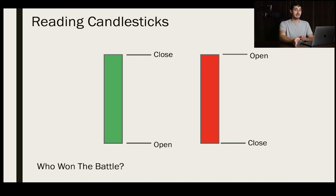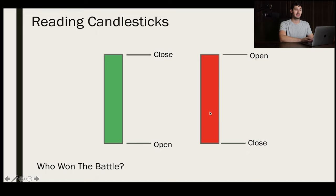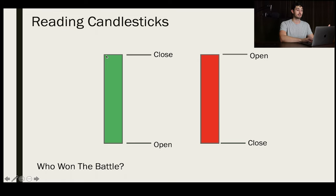The first thing you have to know when reading candlesticks is the body. Depending on whether it's green or red, it's going to tell you exactly where price opened and where price closed. If it's a green candle, price opened at the bottom of the body and closed at the top. So let's say price opened at $3.50 and closed up here at $4, indicating that price went up during that time frame.